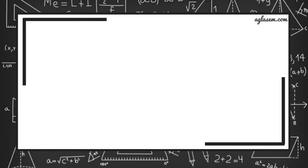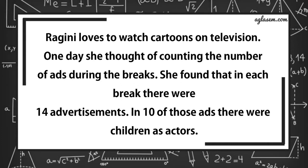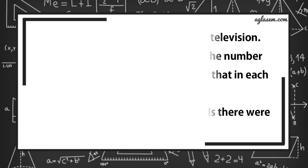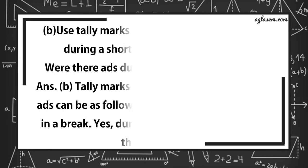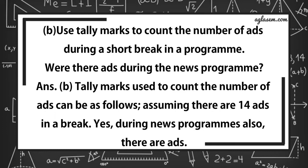Now, turn to page number 164. Ragini loves to watch cartoons on television. One day, she thought of counting the number of ads during the breaks. She found that in each break, there were 14 advertisements. In 10 of those ads, there were children as actors. Why do you think that children are used in so many ads? Answer is, children are used in so many ads because cartoons are mostly watched by children.